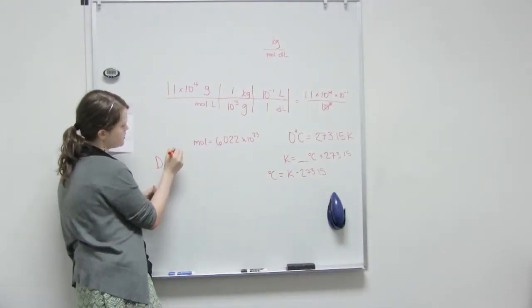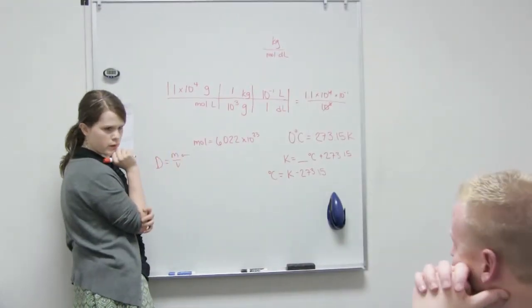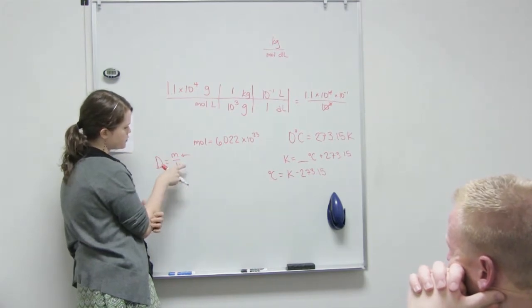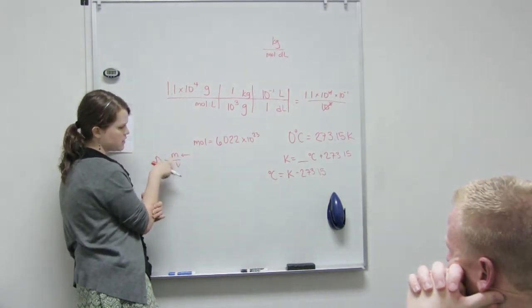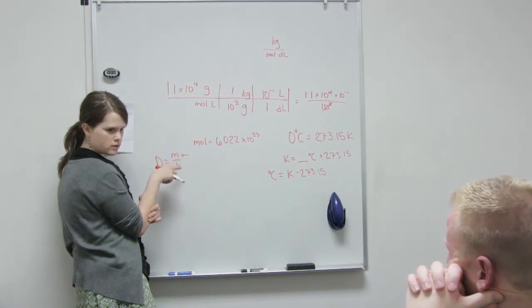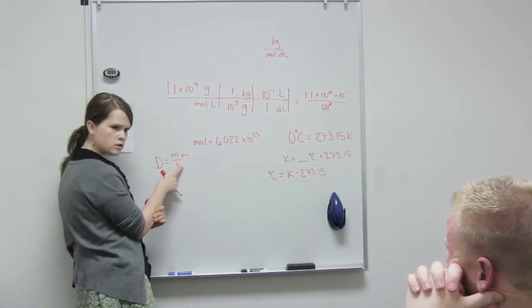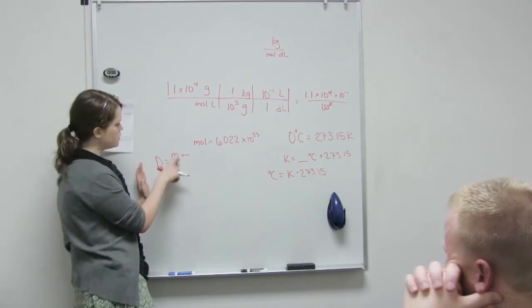Okay, so if this one stays constant, right, if we make this one bigger, we're going to, when we divide, it's going to make the overall number smaller. Yeah, so that's why when the volume gets bigger, density gets smaller.